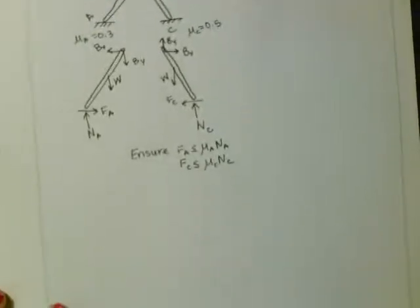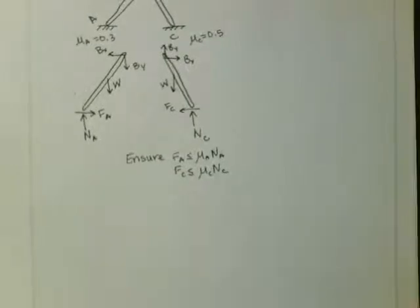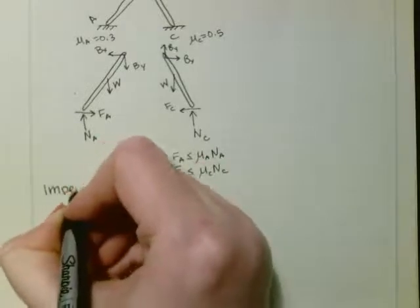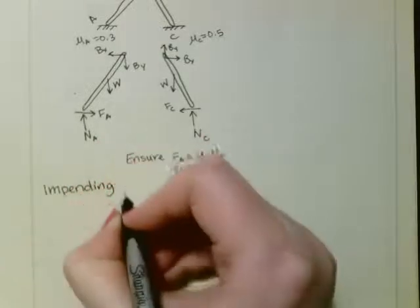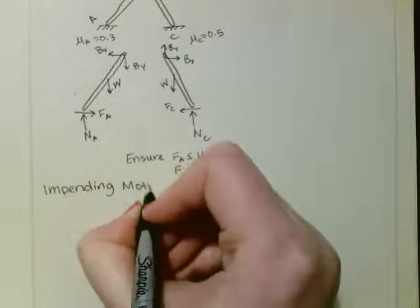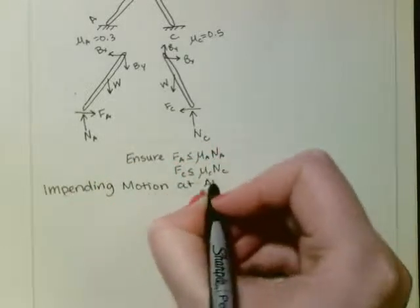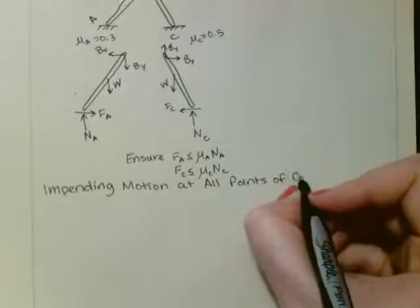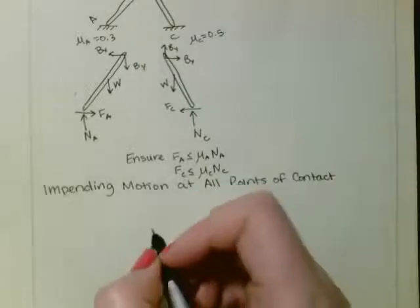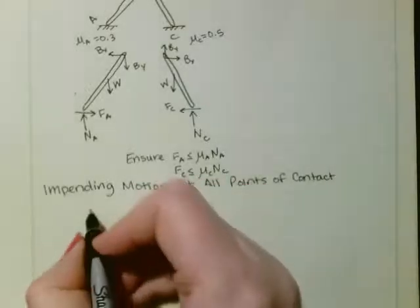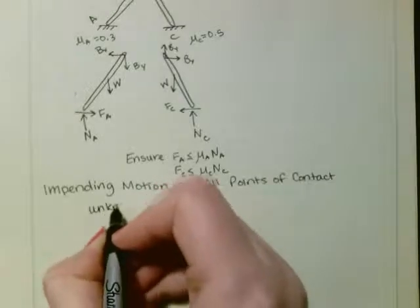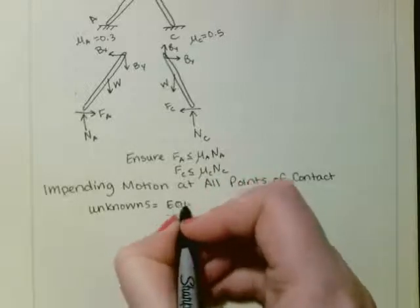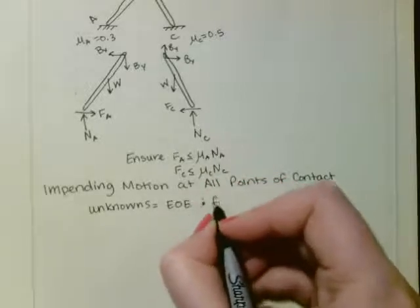So our next type is impending motion at all points of contact. And this is when your unknowns equal the equations of equilibrium that you have and your frictional equations.